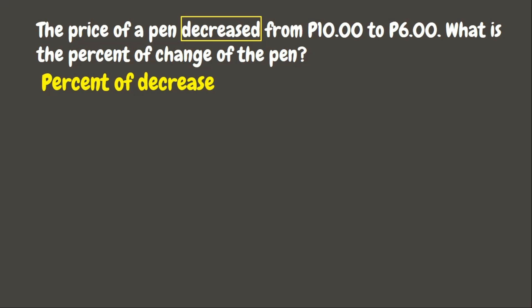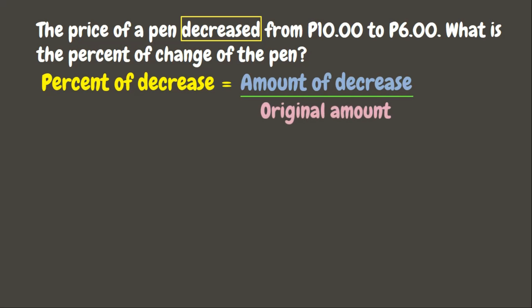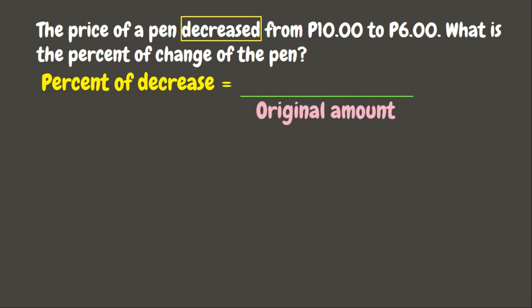To get the percent of decrease, we need to divide the amount of decrease by the original amount. We can get the amount of decrease by subtracting the new amount from the original amount. The original price of the pen is ten pesos minus the new price of six pesos, divided by the original amount which is ten.